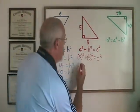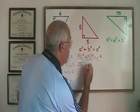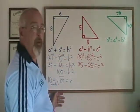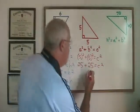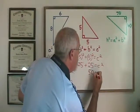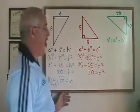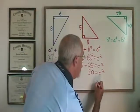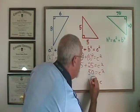5 squared is equal to 25. So I have 25 plus 25 equals c squared. 25 plus 25 is 50. We have 50 equals c squared. C is therefore equal to the square root of 50.